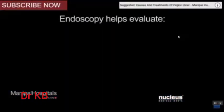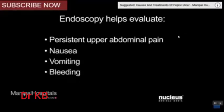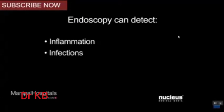Upper endoscopy is used to evaluate symptoms of persistent upper abdominal pain, nausea, vomiting, bleeding, or difficulty swallowing. It can accurately detect inflammation, infections, tumors, ulcers, and other problems that may be present.